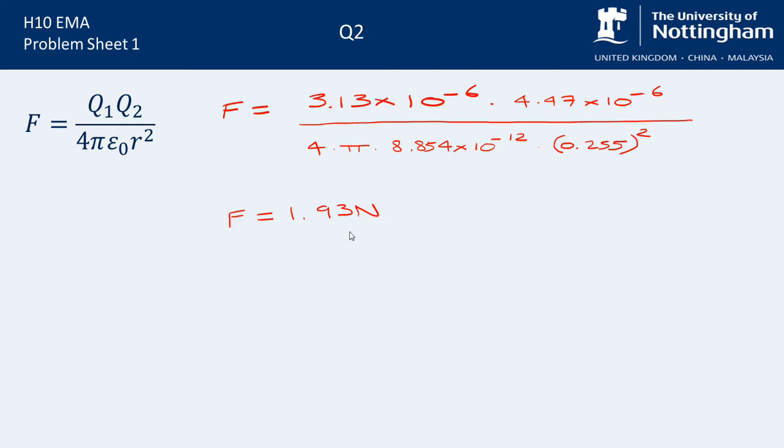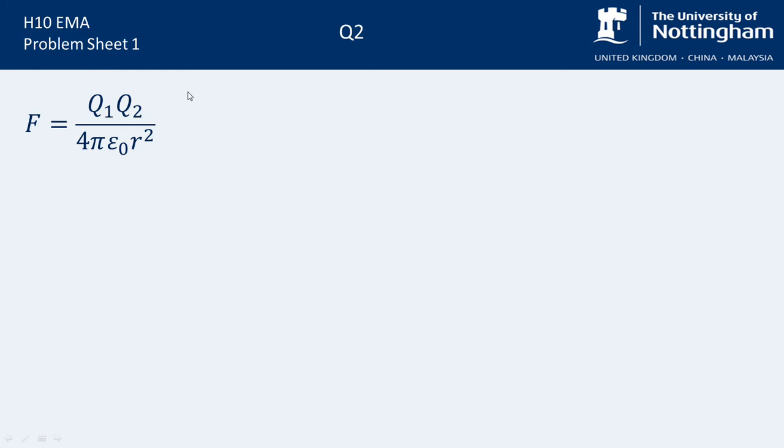For part B, it's slightly more complicated. But we're going to clear the screen. This time we're asked to think about, basically we worked out what the effect of the negative charge on the positive charge was. If we want to work out the other way around, essentially all we're doing is replacing the values of Q1 and Q2.